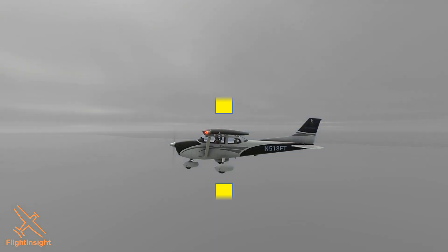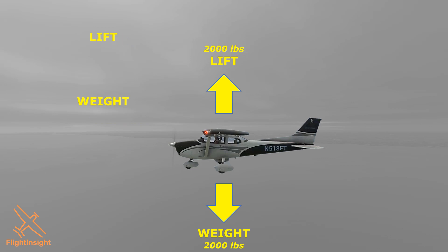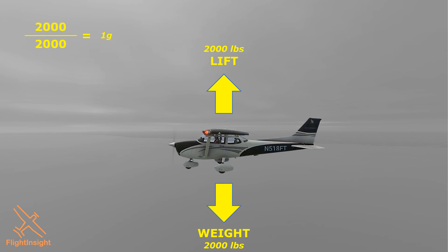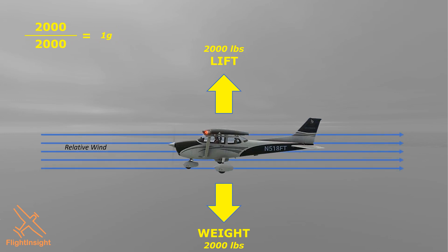In straight and level, unaccelerated flight, lift equals weight and thrust equals drag. Let's say in our Cessna, our lift and weight are both at 2000 pounds. The ratio of lift to weight is our load factor — the total load on an aircraft's structure as a multiple of its weight. At equilibrium, we have a load factor of 1, expressed as 1g, as in g-force. In order to generate this lift, we fly at a certain angle of attack at a certain airspeed. Recall the lift equation for how these factors interact. Angle of attack is the angle made by the relative wind and the chord line of our wing — let's say here it's 2 degrees.